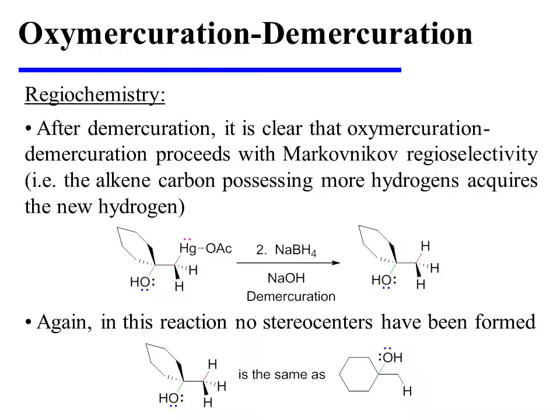After demercuration, it is even more clear that this reaction proceeds with Markovnikov regioselectivity, because the terminal carbon of the alkene, which possessed more hydrogens to begin with, has in fact acquired the new hydrogen during the course of the reaction. Again, this reaction has resulted in no stereocenters, so both representations of the product are the same.